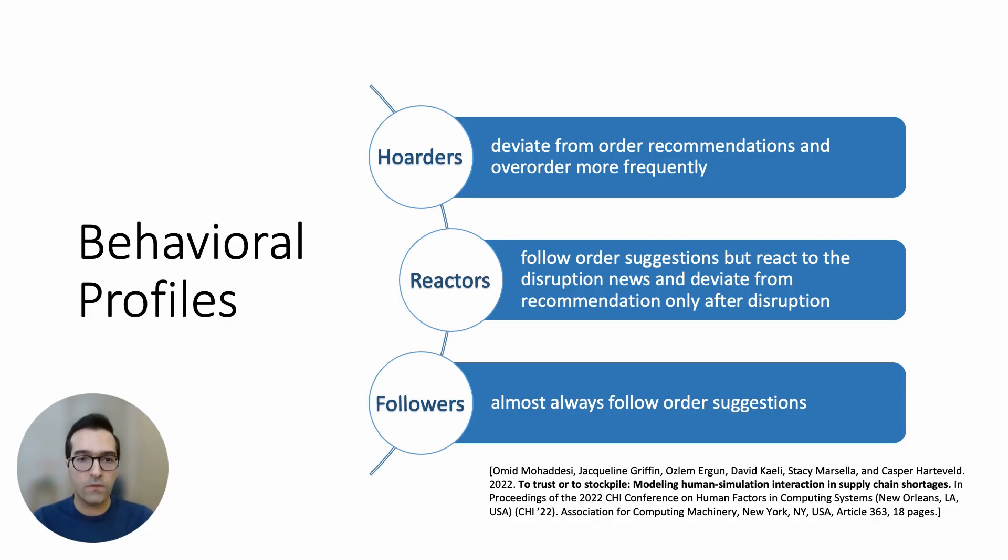To complement the data from thought bubbles, we also obtained behavioral profiles of players using their observable actions in the game. We used a method from our previous paper to extract these profiles, which are called hoarders, reactors, and followers, and are based on how much players deviated from recommended order amounts. More specifically, hoarders deviated from order recommendations more frequently, reactors followed those recommendations but after hearing about the disruption they started to deviate, and followers almost always followed those order recommendations. Again, please check out our CHI 22 paper for more details about these behavioral profiles.